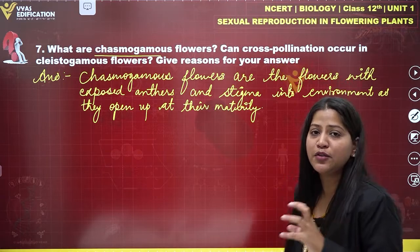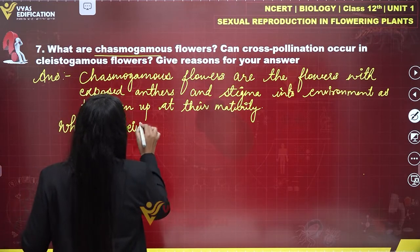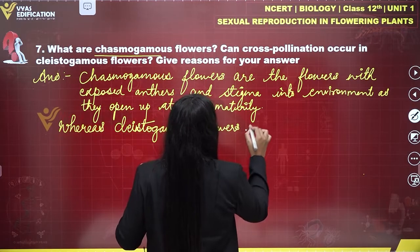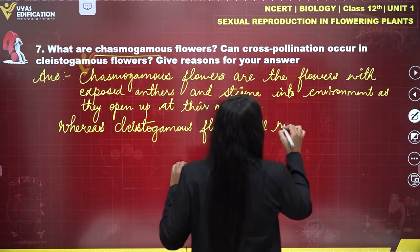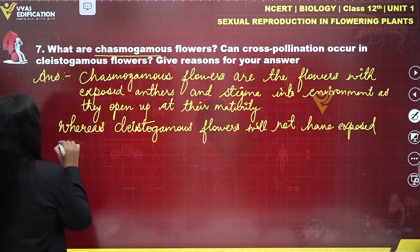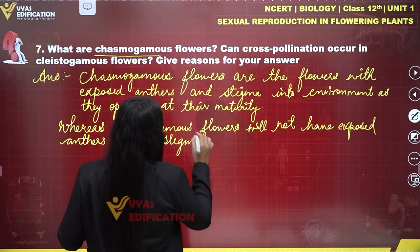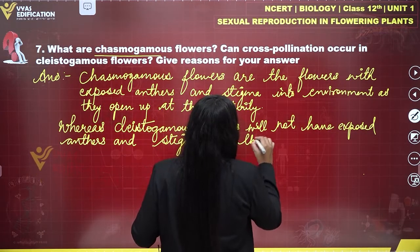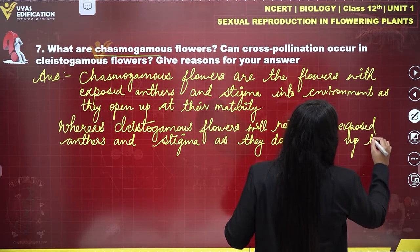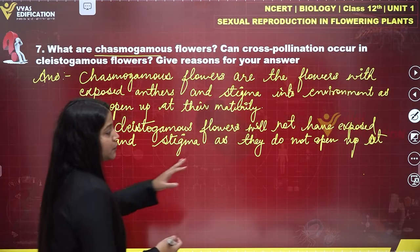Whereas cleistogamous flowers will not have exposed anthers and stigma, as they do not open up at their maturity. When they do not open up at their maturity, their anthers and stigma will not be exposed into the environment. So they do not open up at their maturity.